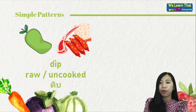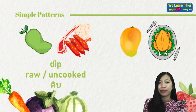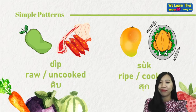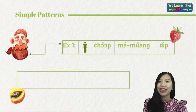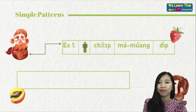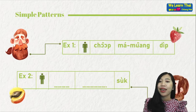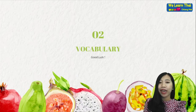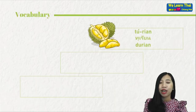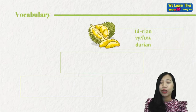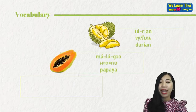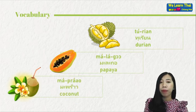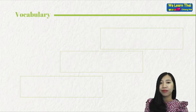ดิบ means raw or uncooked. สุก means cooked or ripe. For example: ดิฉันชอบมะม่วงดิบ — I like raw mango. ดิฉันชอบมะม่วงสุกค่ะ — I like ripe mango.